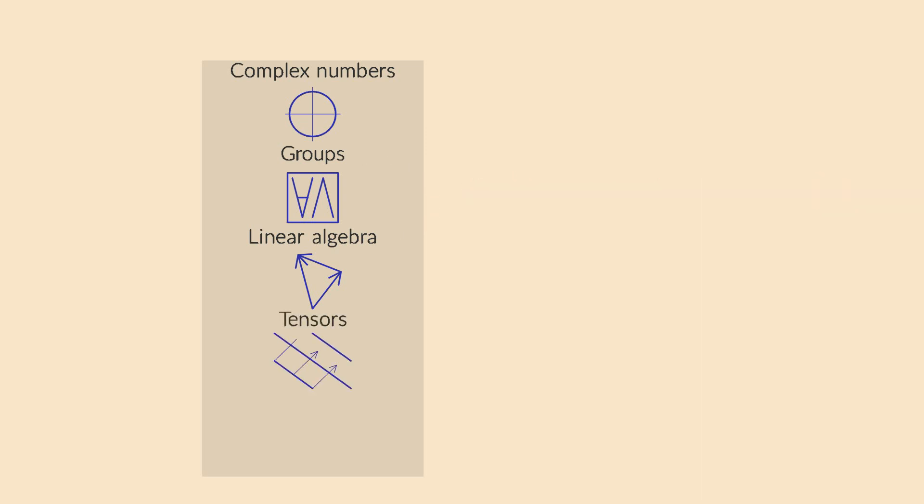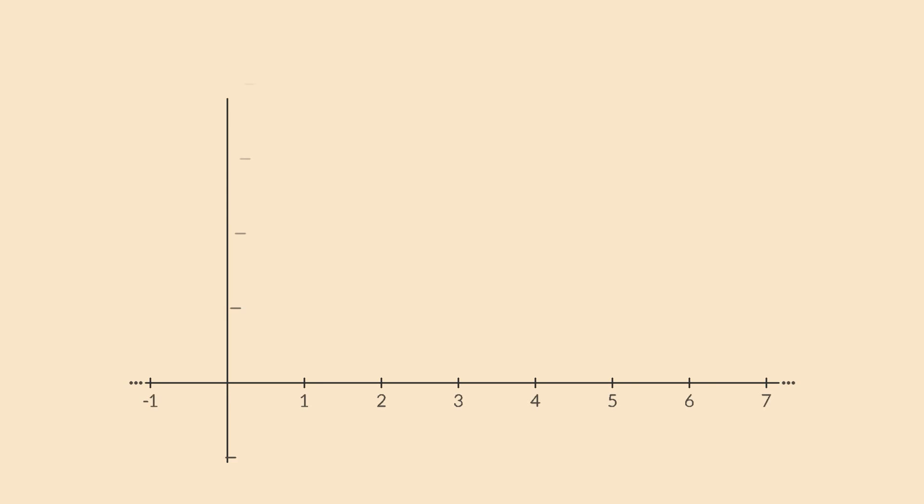We will then look at dual vectors and tensors, which are often used in general relativity. The main question we answer here is how exactly do the coordinates of vectors change when we view them in a different basis? The goal will be to construct mathematical objects that don't depend at all on our specific choice of basis.